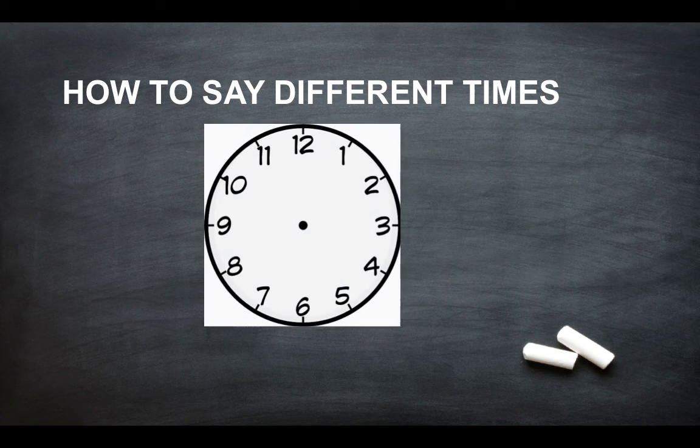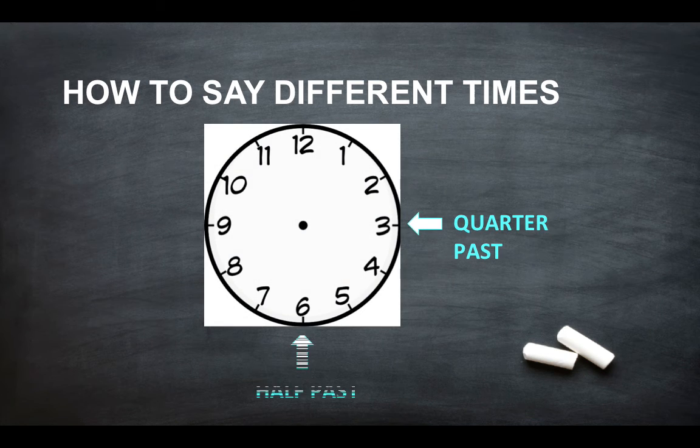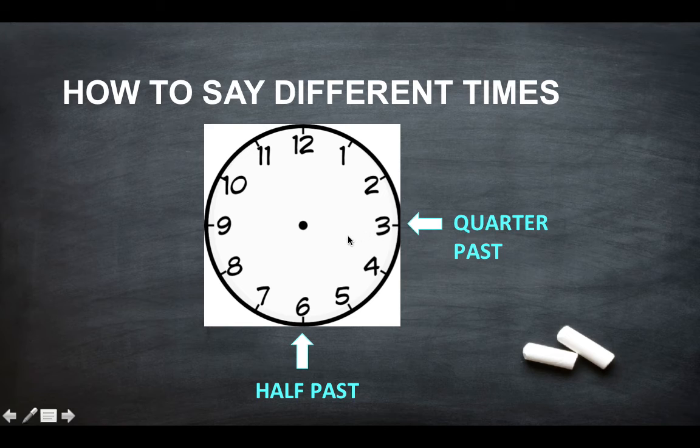So how to say different times. Quarter past is if the hand is pointing at the three, half past is the six, and quarter to is the nine.